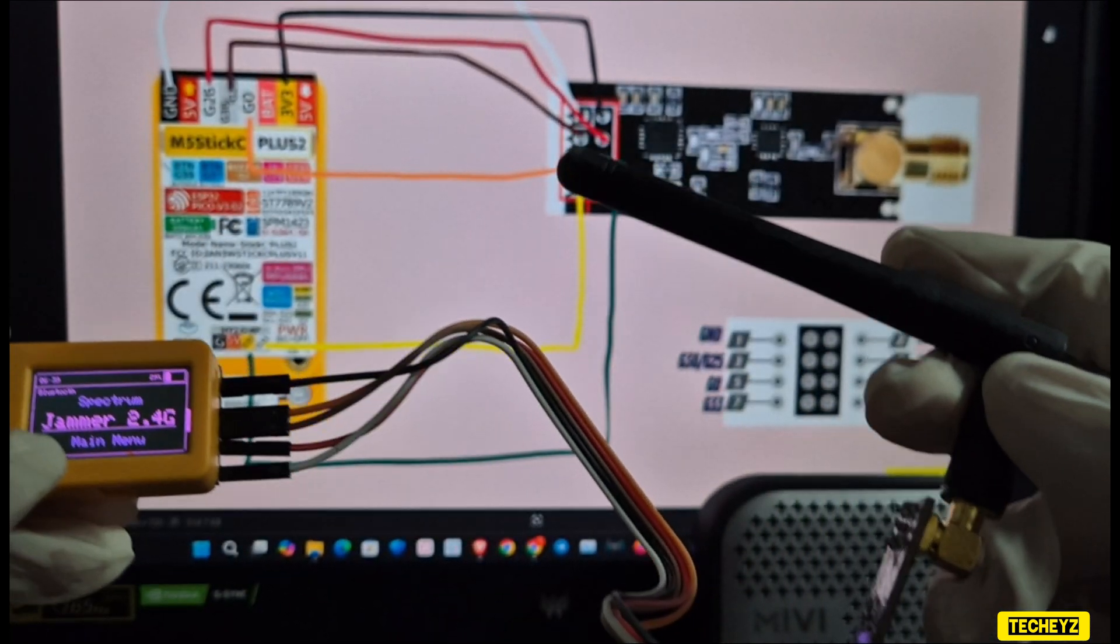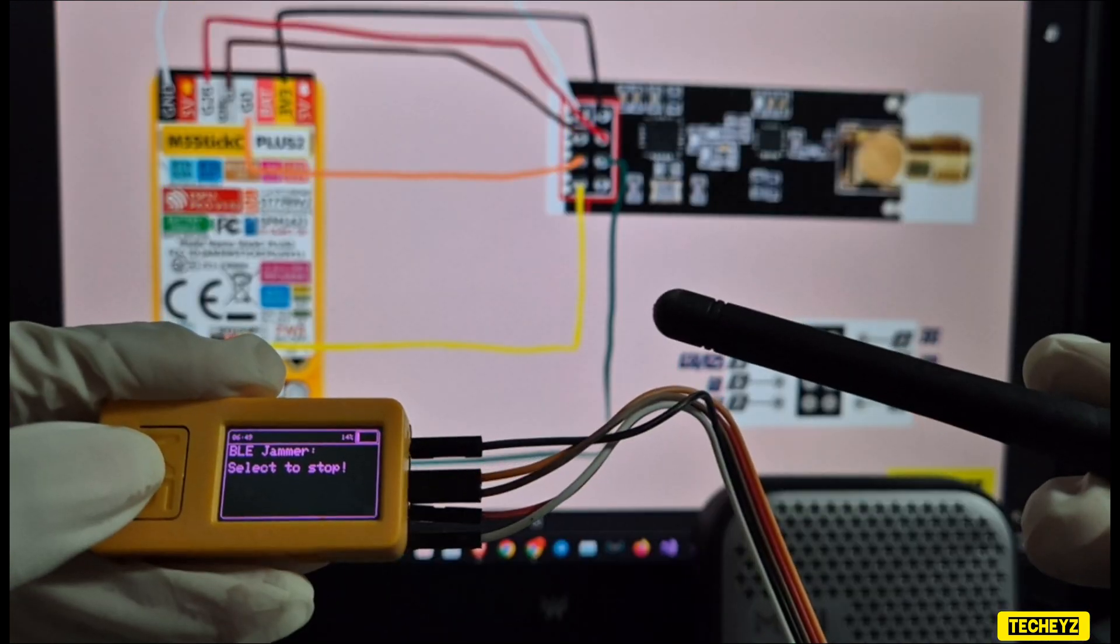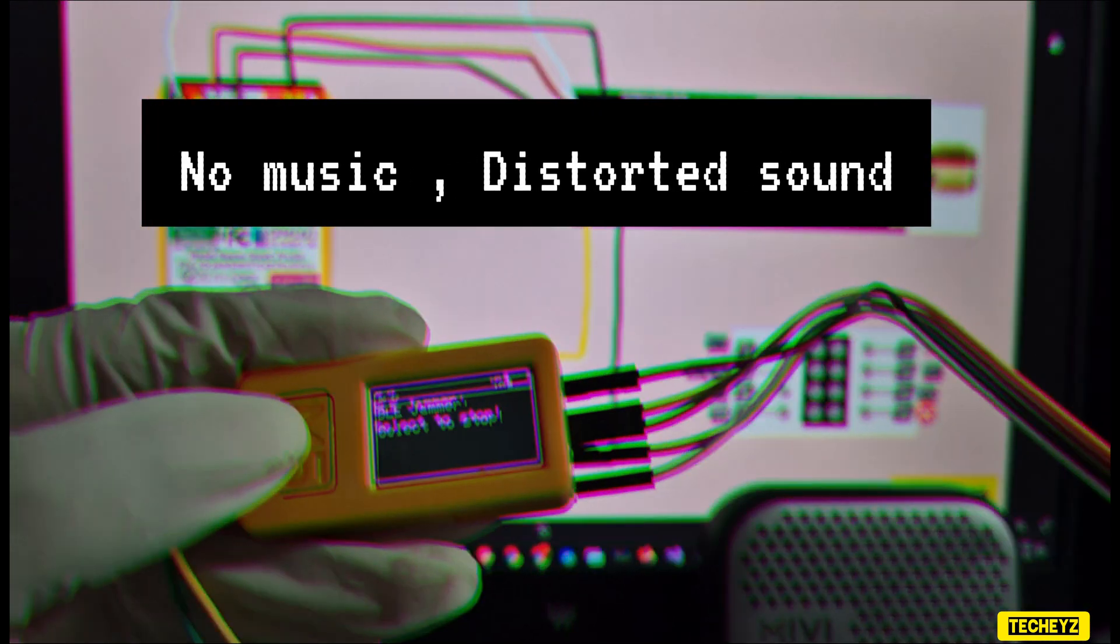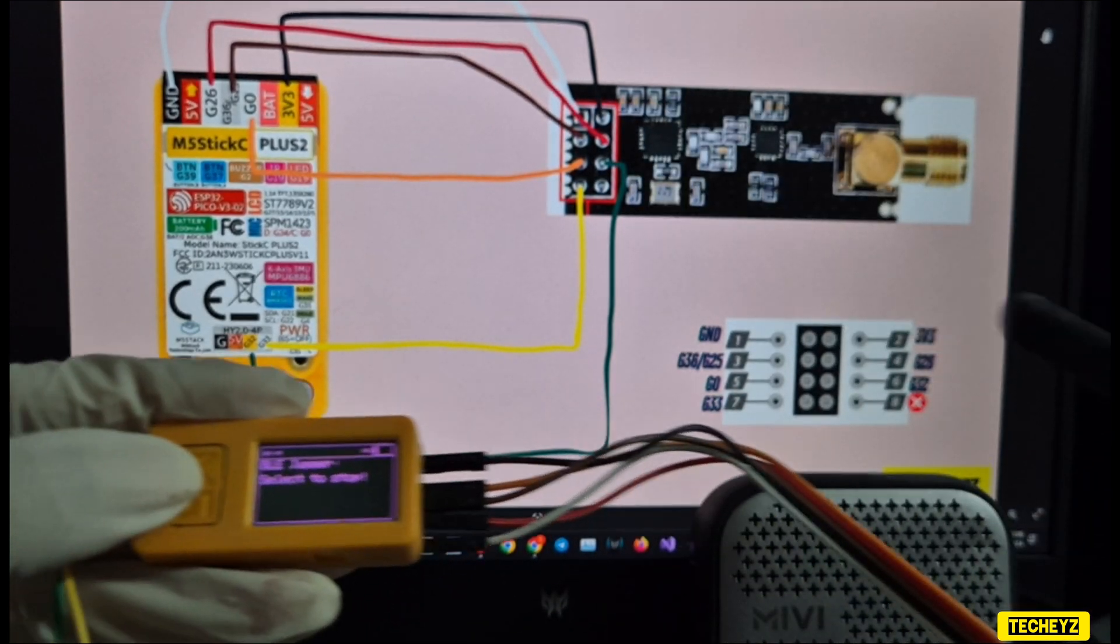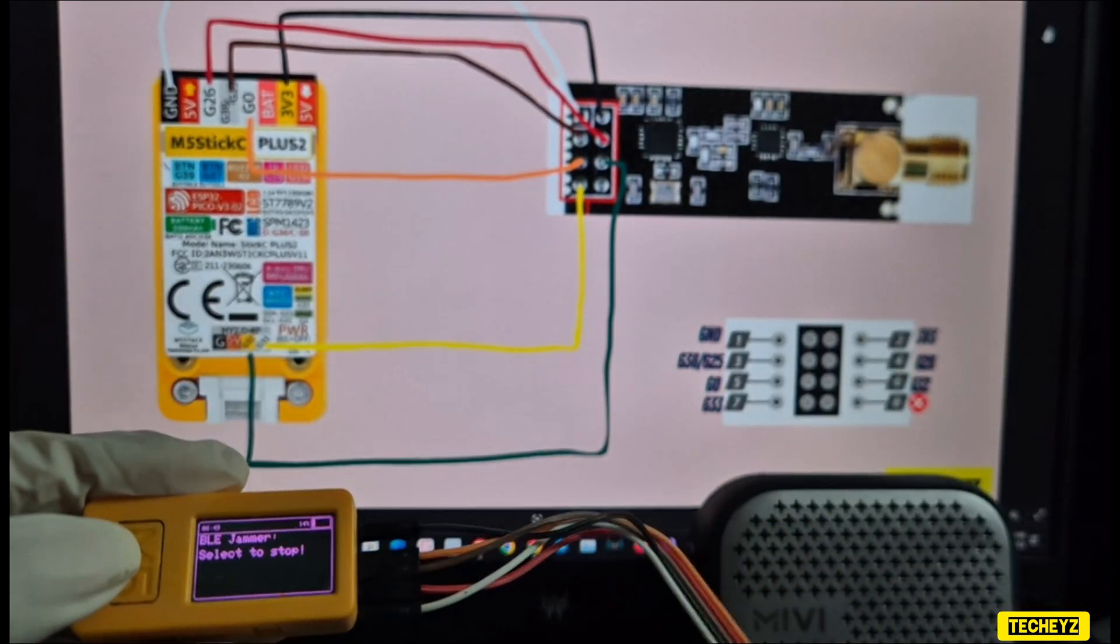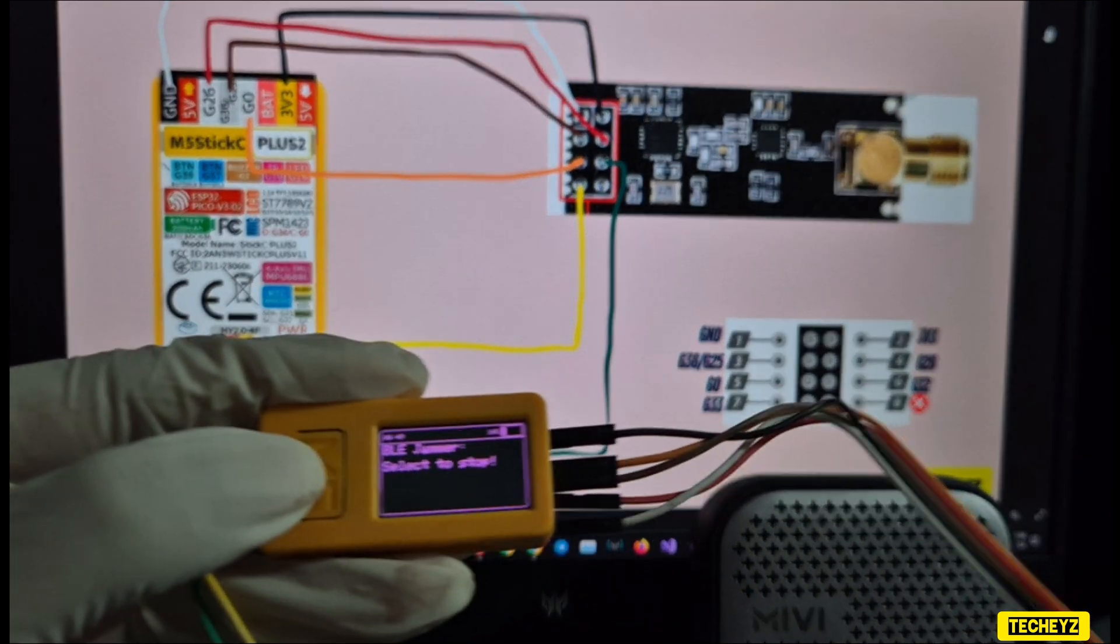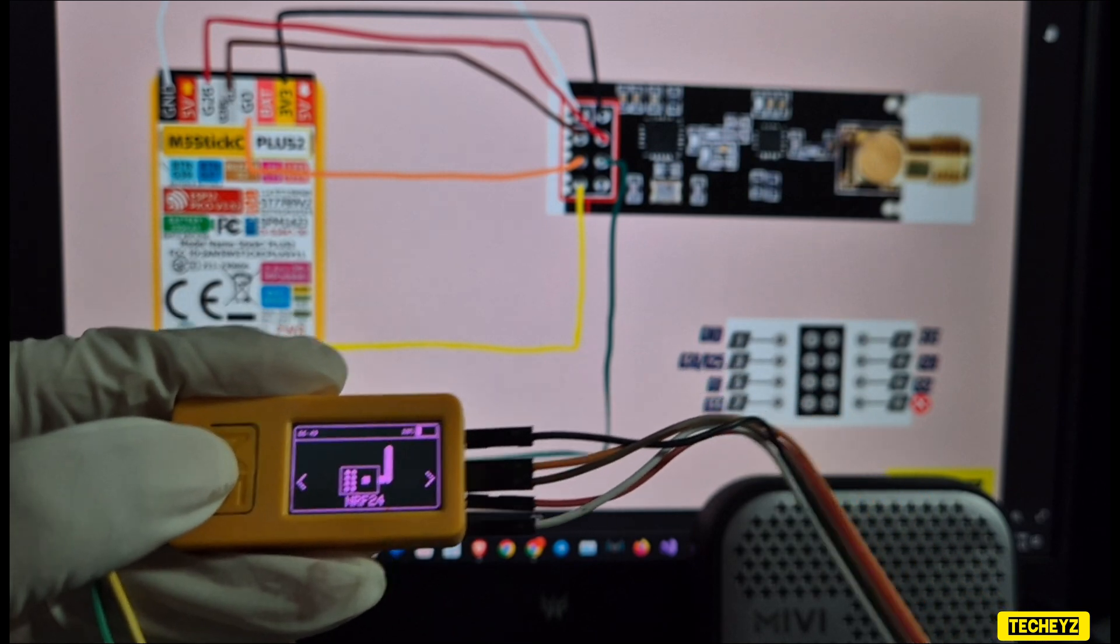So once I click on the jammer option, you can see there is no sound. Unless and until we stop the Bluetooth jamming, we won't be able to hear any sound. As soon as we stop the jamming, you can see the music is back to normal.